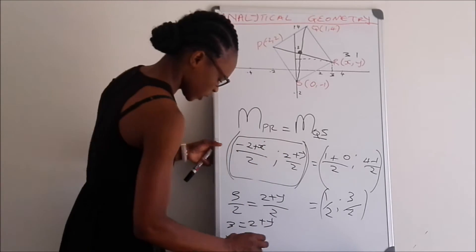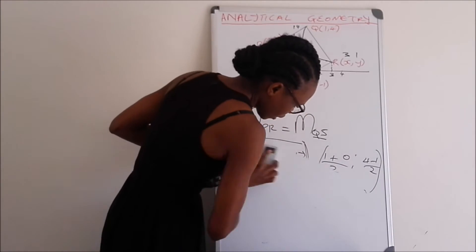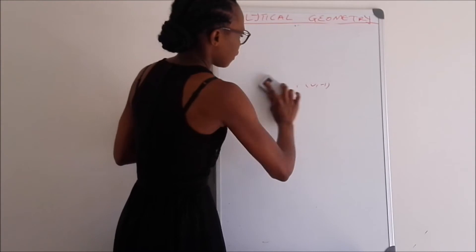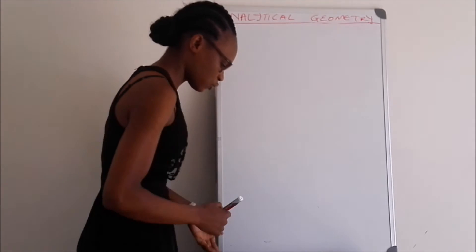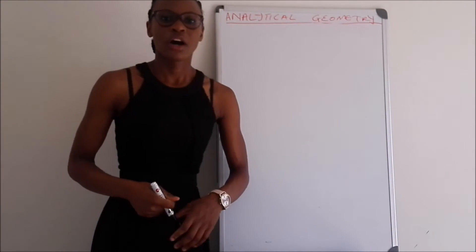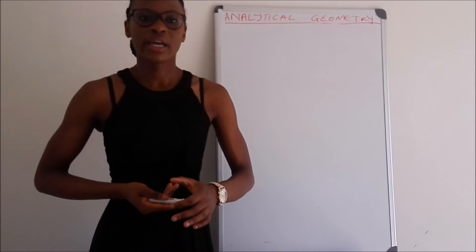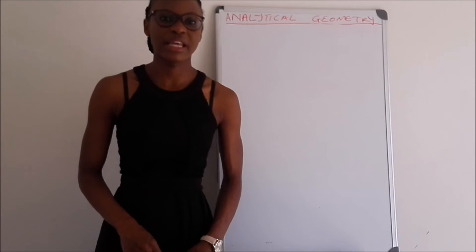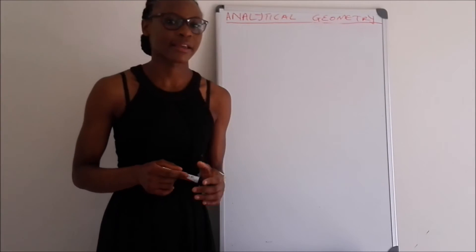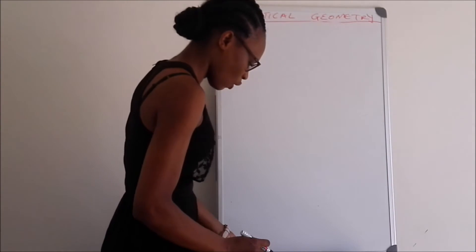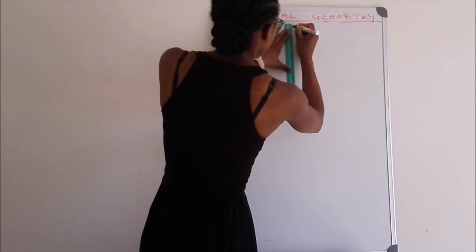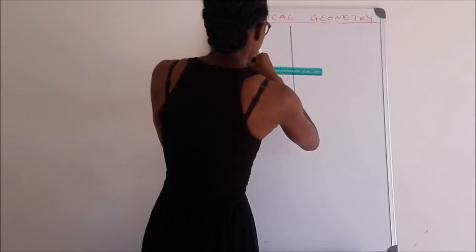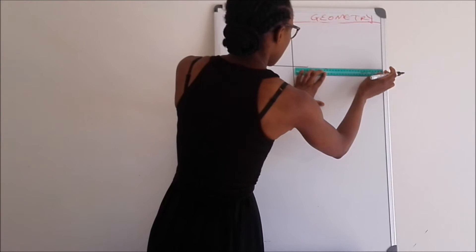The next question is to find the distance between points. We are given triangle ABC. An important tip: always draw your shapes in a Cartesian plane so you get an overview of how it looks and can check your answers visually.